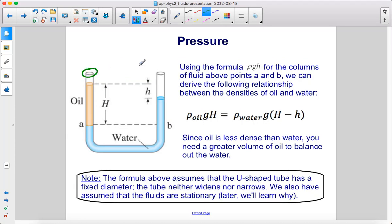All right, first, because both of the ends of the pipe are open, they're both subject to the atmospheric pressure, that's equal. So now we can use the formula rho GH for the columns of fluid above points A and B. And we can derive the following relationship between the densities of oil and water. So we have rho GH of oil here. The pressure here is equal to rho GH for this amount of oil. So we have the density of oil times G, because we're on Earth, times this height, capital H. That's the depth below the fluid.